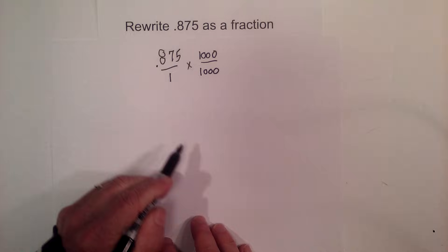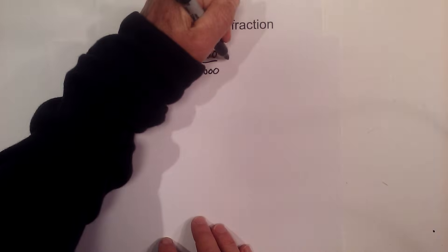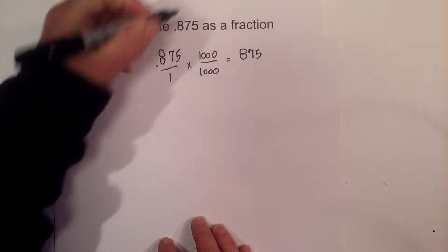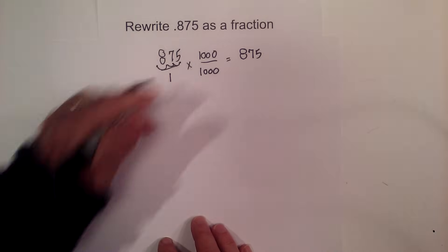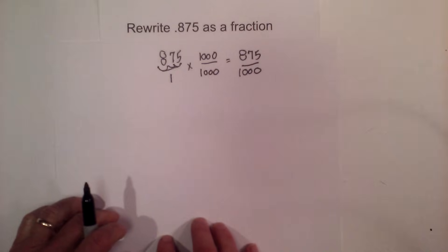Because I'm moving it three places to the right. When you multiply 0.875 times 1,000, that equals 875. And then 1 times 1,000 is 1,000.